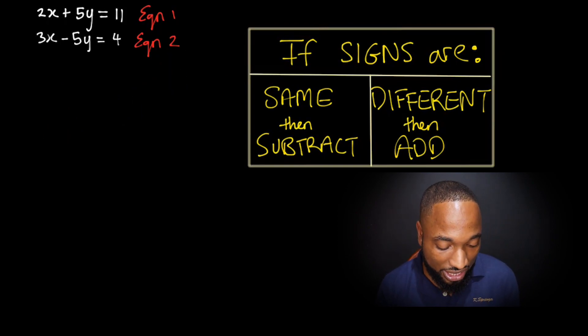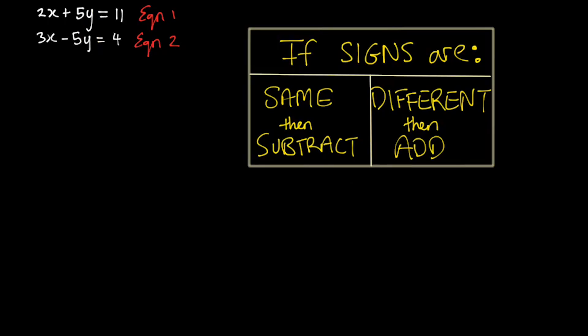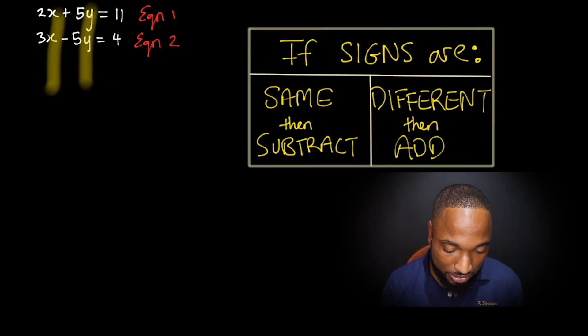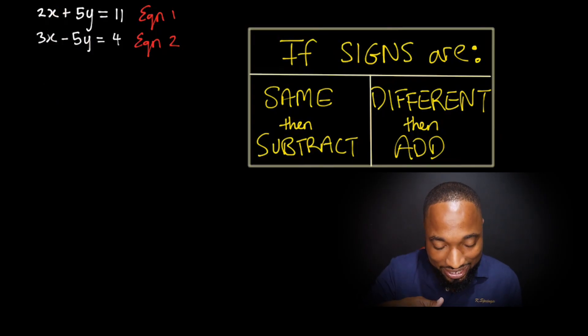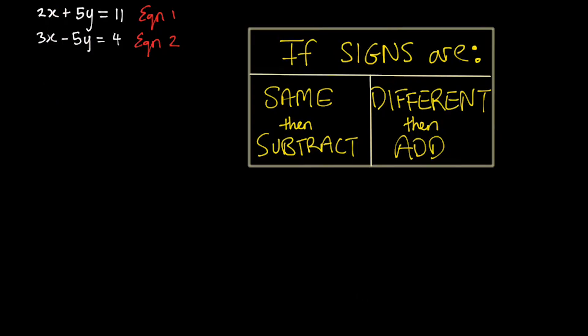Which variable do we eliminate? We eliminate the Y because both of these two numbers are the same. Notice how the X's are lined up, the Y's are lined up, and the numbers by themselves are lined up—everybody's aligned, which makes it easier to do the elimination method process.